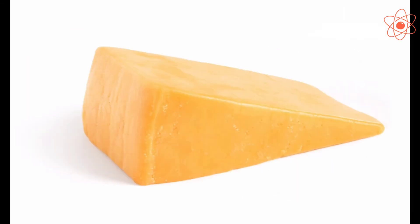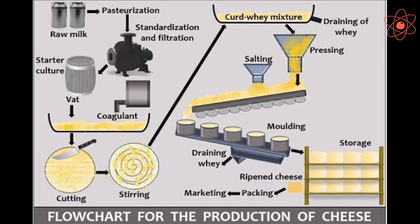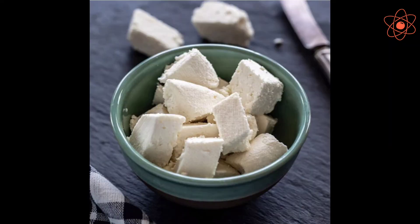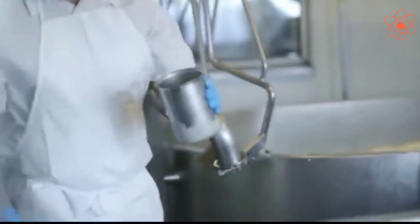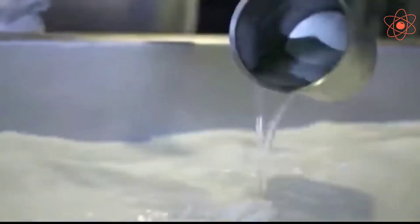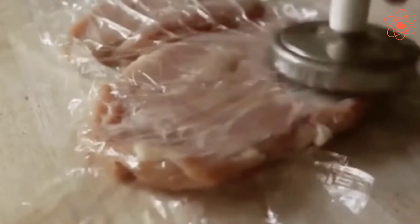Cheese is also made using Lactobacillus. Paneer, i.e., cottage cheese, involves the use of Streptococcus bacteria. Curd and cheese manufacturers also add a substance called rennet, obtained from the stomach lining of young cattle, to the milk to make the process faster. Second, bacteria act upon tough meat and make it soft — this process is called tenderization of meat.